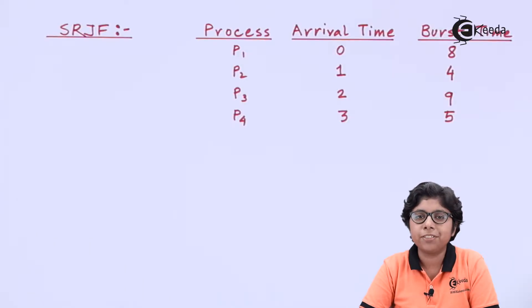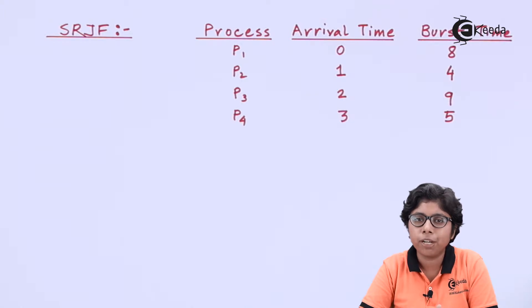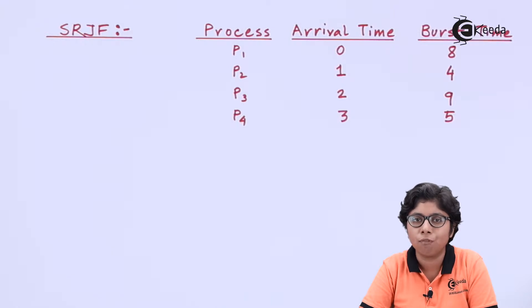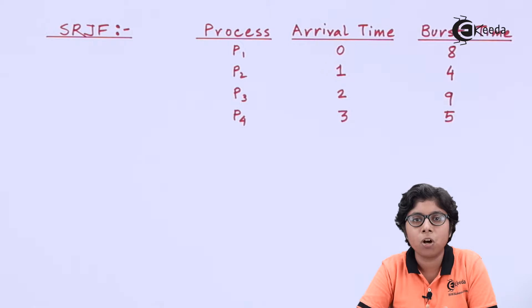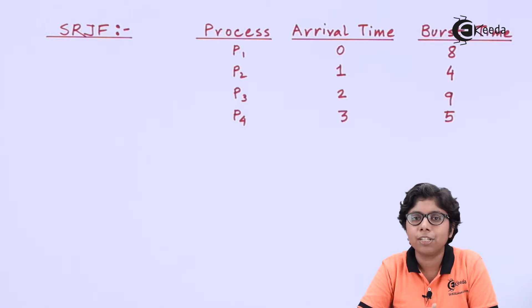As we know that SJF has two versions: one is preemptive and one is non-preemptive. The non-preemptive one is known as normal SJF and the preemptive one is known as Shortest Remaining Job First algorithm. Here we will see that the current process executing a CPU burst time can be preempted and replaced with a new process that is arriving, halting the current process and executing the new one.